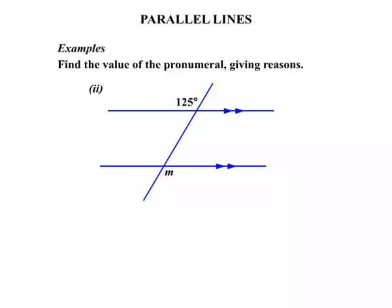Our second example now. We need to find M. Now, if we consider M and then the 125 degrees. Well, there's no straight out connection between the two angles just yet. They're not alternate. They're not corresponding. And they're not co-interior.